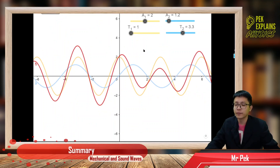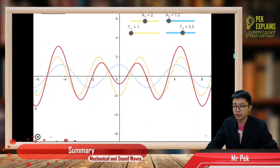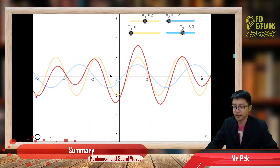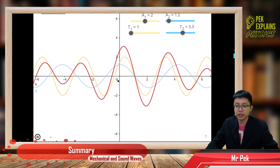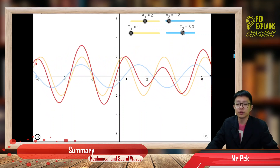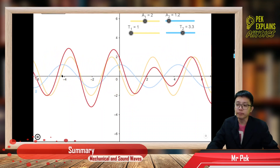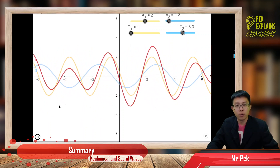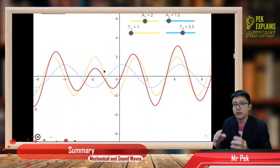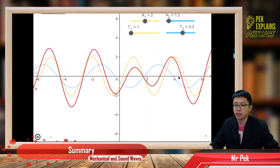Here's a simulation. If you look here, we have a blue wave moving to the right, very slowly. Another wave, which is the yellow wave, is moving to the left. So you have two progressive waves: the blue wave moving to the right and the yellow wave moving to the left. The red wave is formed when these two waves — the blue wave and the yellow wave — superposition, overlapping each other. That's why it produced the red wave.